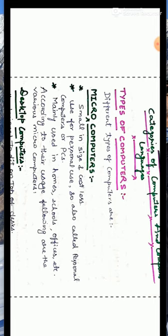The meaning of micro is small. That means computers which are small in size and having less cost are called microcomputers. These are usually designed for personal use, therefore they are also called personal computers or PCs. These are mainly used in homes, schools, shops, etc.